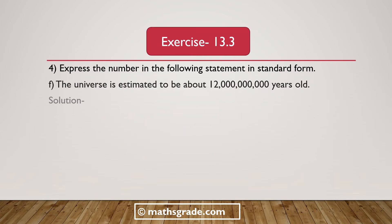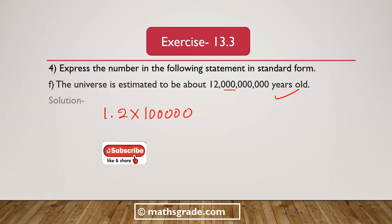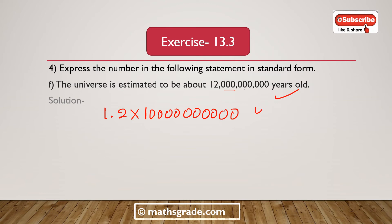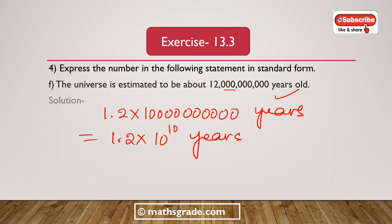Now we solve part F. The universe is estimated to be about 12,000,000,000 years old. If we place the decimal point after the digit 1, it will be 1.2 multiplied with 10 to the power 10 years. So the universe is estimated to be about 1.2 × 10¹⁰ years old.